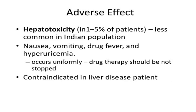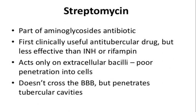Streptomycin is a first-line anti-tubercular drug and part of the aminoglycoside antibiotic class. It was the first clinically useful anti-tubercular drug but is less effective than INH and Rifampicin. It acts only on extracellular bacilli, not intracellular, whereas both Rifampicin and INH act on both extracellular and intracellular organisms.